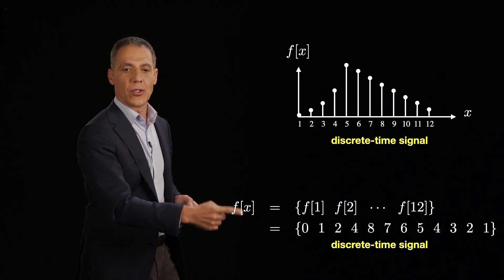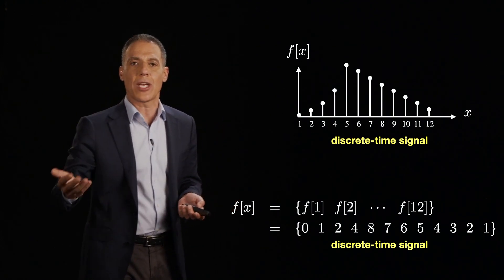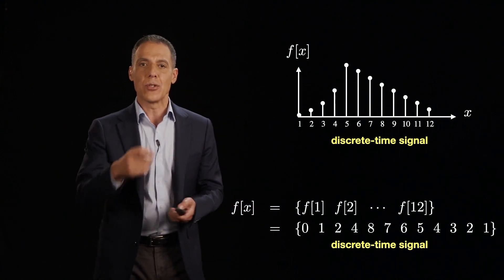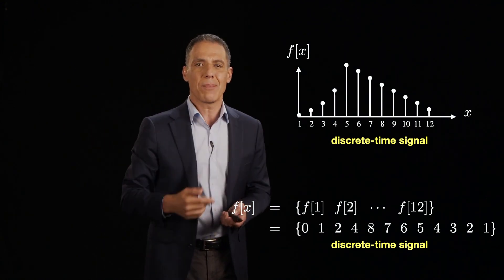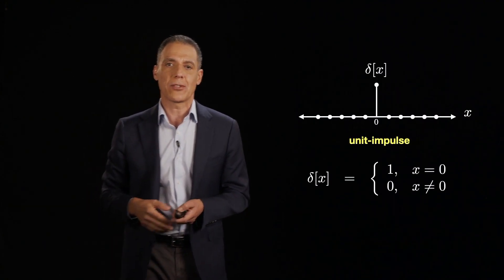And that, of course, if I go back to this graph over here, is just the value 0, 1, 2, 4, 8, 7, so on and so forth. So you can think about the signal graphically. You can think about it numerically. I'm simply enumerating all the values in the 1D plot. By the way, the image is going to be exactly the same. I'm just going to have rows and columns associated with all the pixel values.